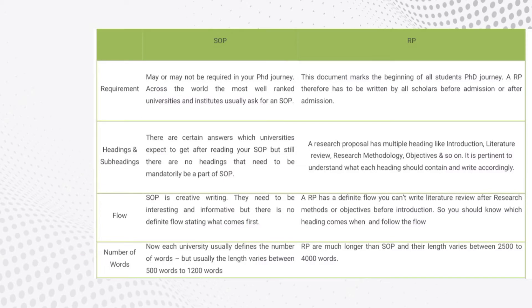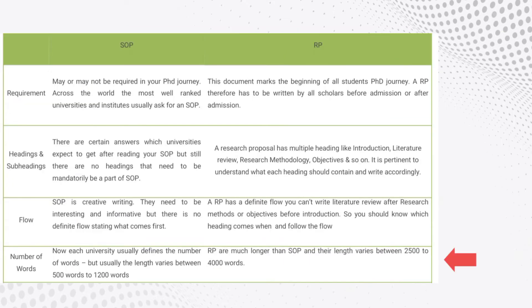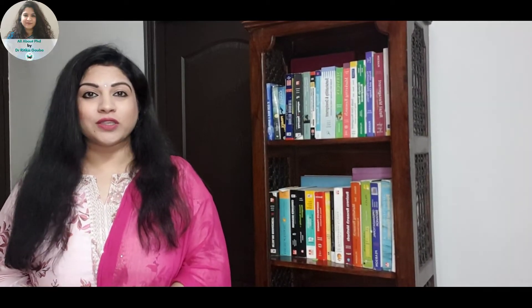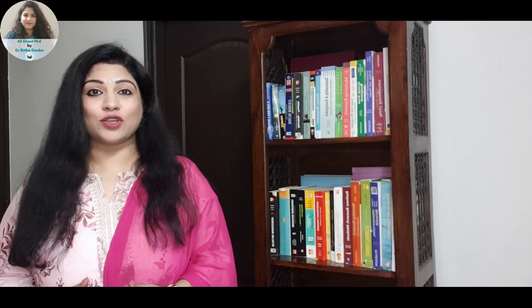The last characteristic is word count. Normally, a statement of purpose is a shorter document, written somewhere around 500 to 1000 words. Whereas a research proposal is almost double or triple the size of an SOP and should be written somewhere in the range of 1500 to 3000 words.